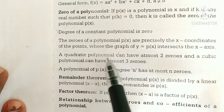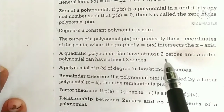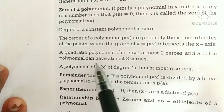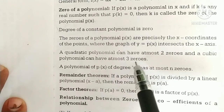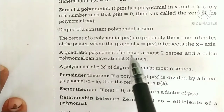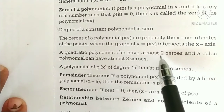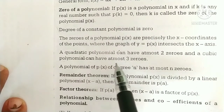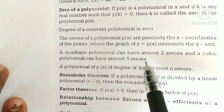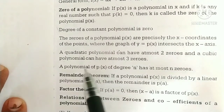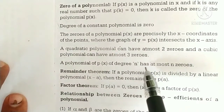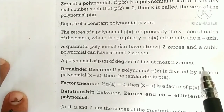A quadratic polynomial can have at most two zeros and a cubic polynomial can have at most three zeros. A polynomial p of x of degree n has at most n zeros.